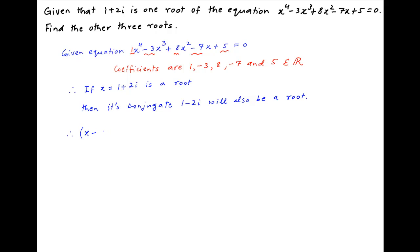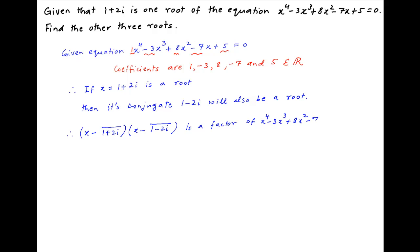Therefore, x minus (1 plus 2i) times x minus (1 minus 2i) is a factor of x raised to the power 4 minus 3x cubed plus 8x squared minus 7x plus 5.